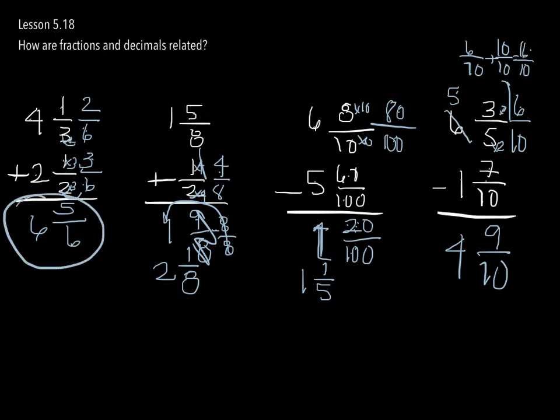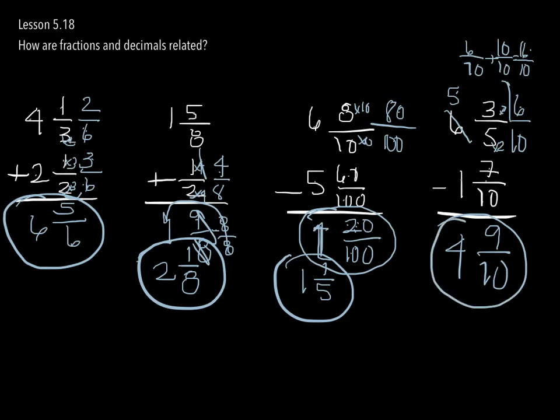So these are our answers boys and girls. We've got 6 and 5 sixths. 2 and 1 eighth. 1 and 1 fifth. Now if you've got 1 and 20 one hundredths, you're close, but we just have to take that next step. And then finally, 4 and 9 tenths. That's the end of video 1. Let's get ready for video 2.